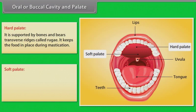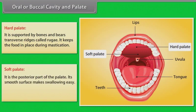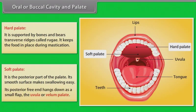The soft palate is the posterior part of the palate. Its smooth surface makes swallowing easy. Its posterior free end hangs down as a small flap called the uvula or velum palate.